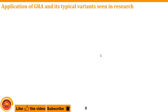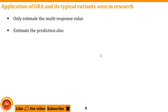Regarding the application of gray relation analysis and its typical variants in research: from a mechanical engineering perspective, the main use is to estimate a multi-response value. Researchers conduct, say, 20 experiments with five outputs — two to be minimized and three to be maximized — and use GRA to find which experiment is best among the conflicting criteria. For example, experiment 14 may be identified as the best optimal value. Another variant involves prediction: after finding the optimal experiment, they estimate the mean and predict outcomes.